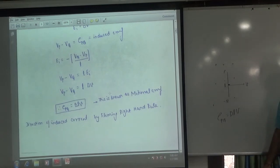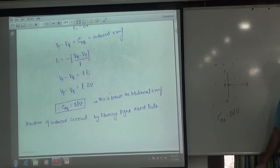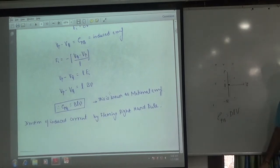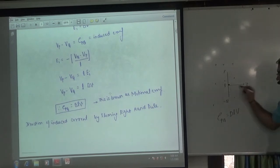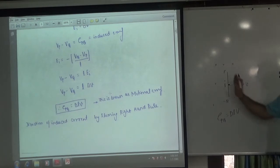And with a very important point: where will this EMF develop? In between P and Q. That means in this L length. That means perpendicular to the velocity axis.